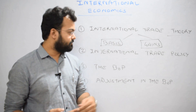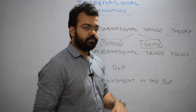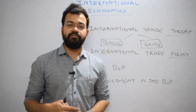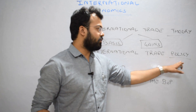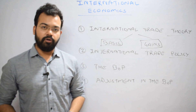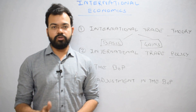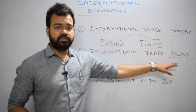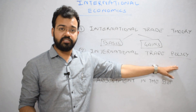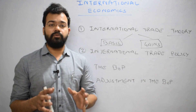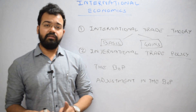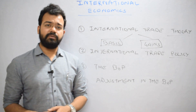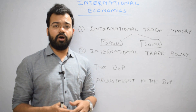The second pillar is international trade policy, where the keyword is 'policy.' Policy plays an important role when we engage in international trade — covering areas like customs tariff, quota, embargo, and exchange rate difficulties. When we put restrictions on import duty or additional custom duty, policy matters become the most important things in international economics.